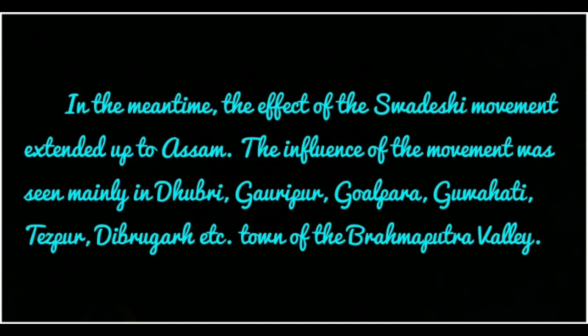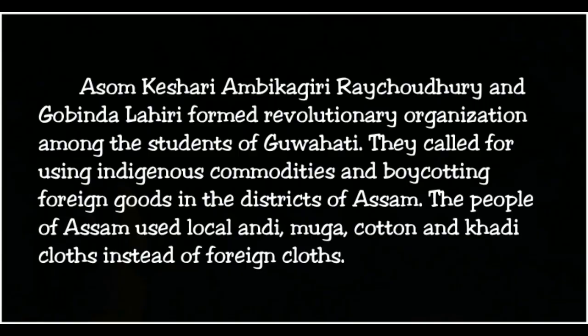Ambikagiri Rai Choudhury and Govinda Lahiri formed a revolutionary organization among the students of Guwahati. They called for using indigenous commodities and boycotting foreign goods.